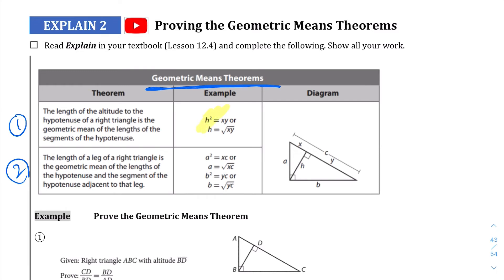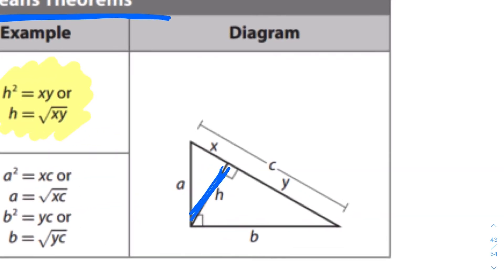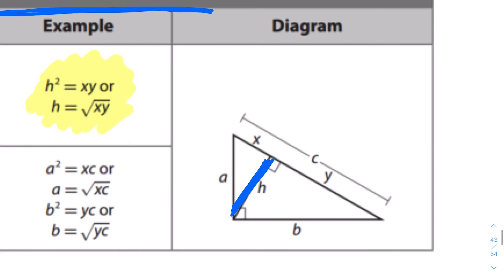Basically says that the height, let me zoom in here, the height of this right triangle. If you square it, it's going to equal this times this. That's the basic idea. The two segments that the hypotenuse is split into. If you multiply them, it's the height squared. Okay? So that's one thing.